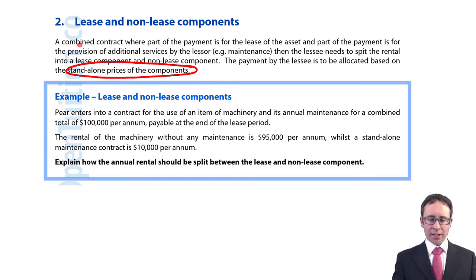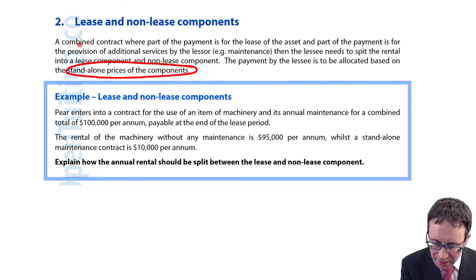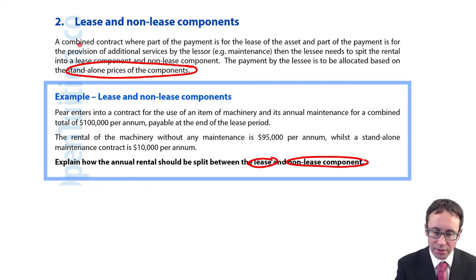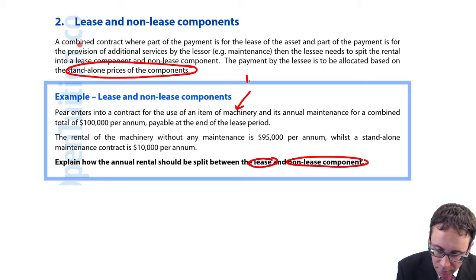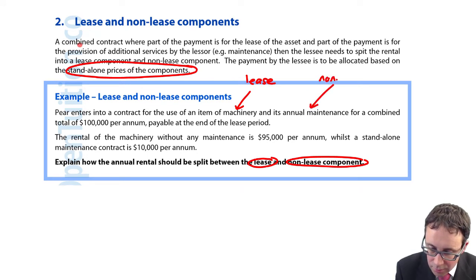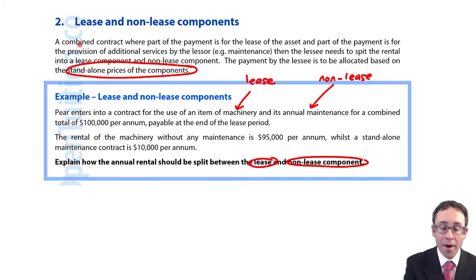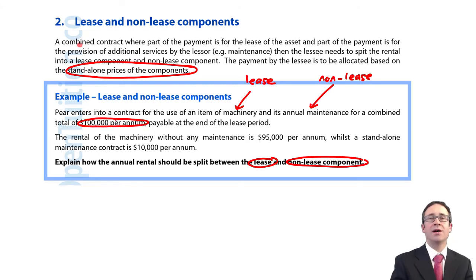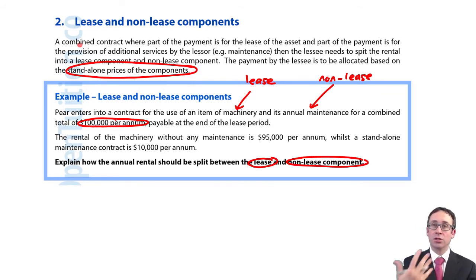The question asks us to explain how the annual rental should be split between the lease and non-lease component. Per the scenario, a company enters into a contract for the use of an item of machinery and its annual maintenance, for a combined total of $100,000 per annum payable at the end of the lease period. The machinery is the lease component, and the annual maintenance is the non-lease component. We need to split that $100,000 into the lease and non-lease components.